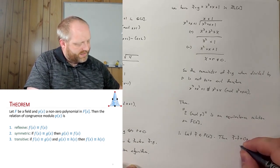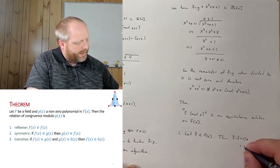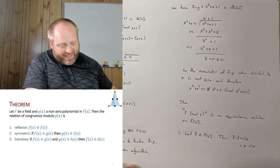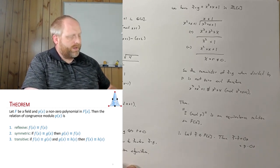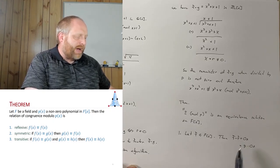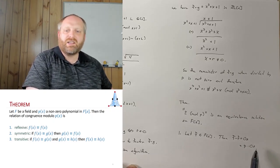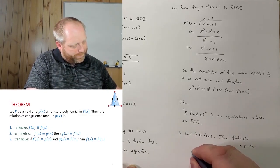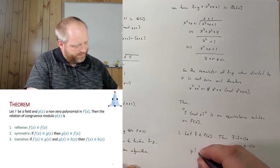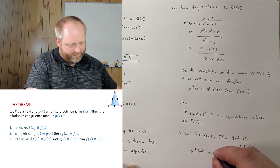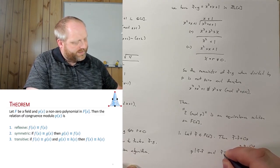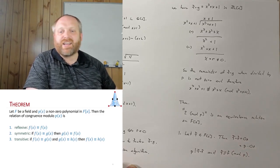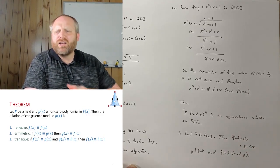So this is just going to give us the zero element inside of F, which I can also write as p times zero. So this means that f minus f is equal to p times an element inside of F[x]. So therefore, this means that p divides f minus f, and this means that f is in fact congruent to f modulo p by our definition. So that was the first one, nice and easy.